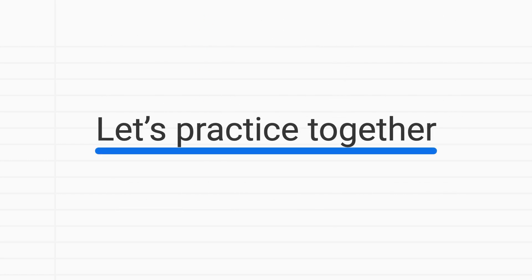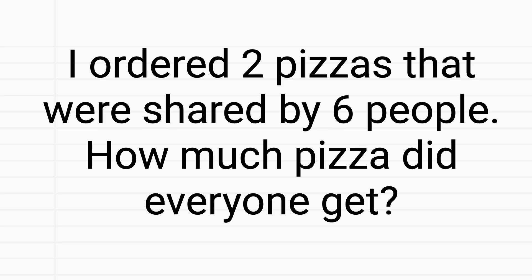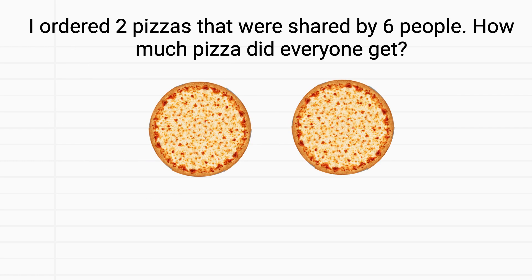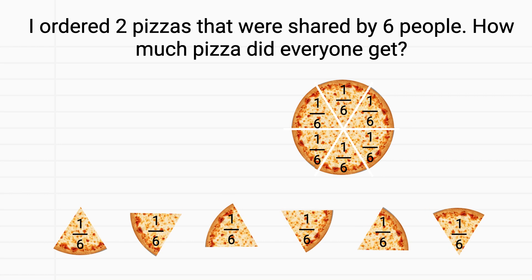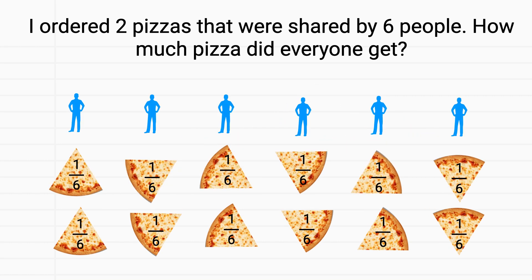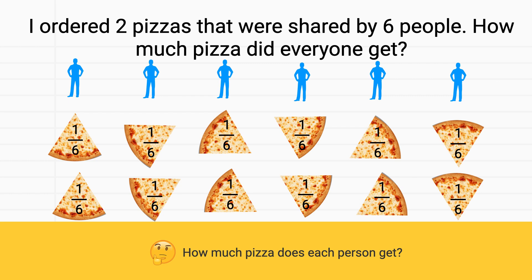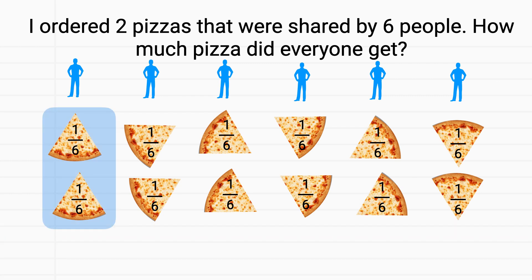Let's practice some of these together. We can imagine our two pizzas, and we'll cut each of them into six pieces. Each piece of pizza will represent one-sixth of the whole pizza. So we could give everybody one piece from the first pizza and one piece from the second pizza. If we look at these two slices, each one is one-sixth, so in total each person will receive two-sixths of a pizza.